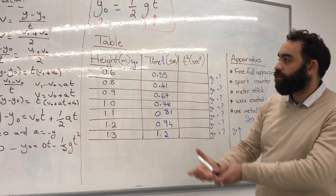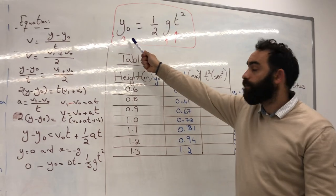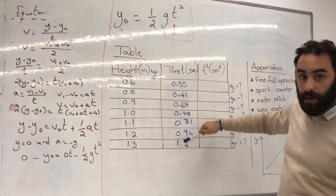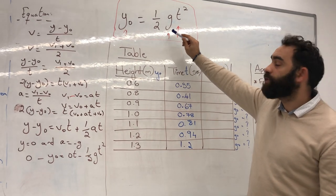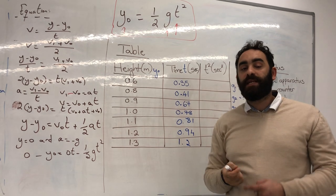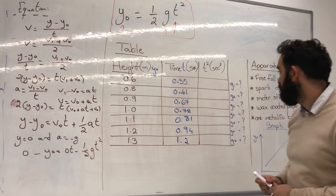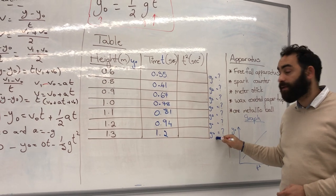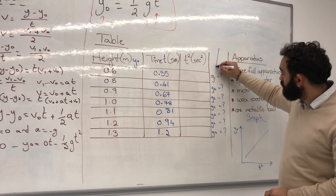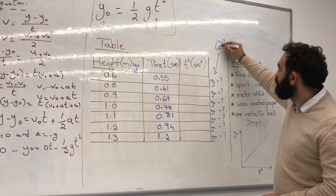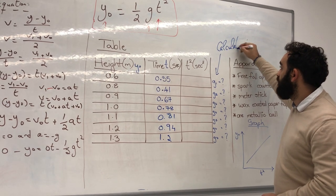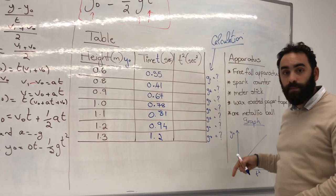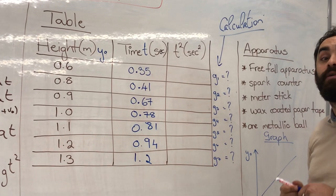So, from our table, we know what to find. We have the y0. We have the t squared, which is just the square of this one. So, we will find the g. So, I'm supposed and expected to see in your reports g1, g2, g3, g4, g5, g6, and g7. This is in your calculations part. I don't want to see it in the table. I don't want to see these in the table. I want to see these in your calculations part.